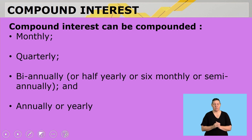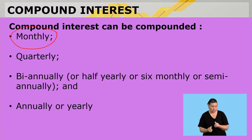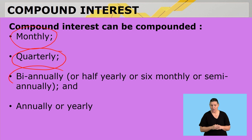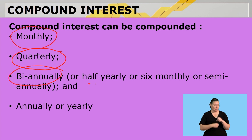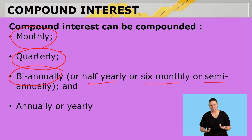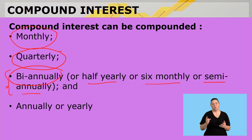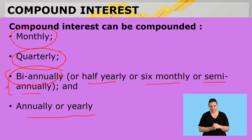Compound interest can be compounded monthly, quarterly, bi-annually — which is the same as half yearly, six monthly, or semi-annually — and annually or yearly. Those are all just synonyms.